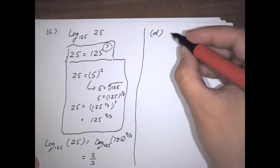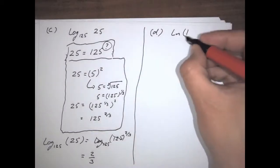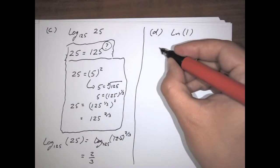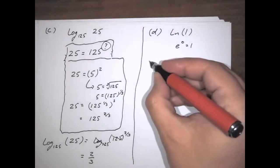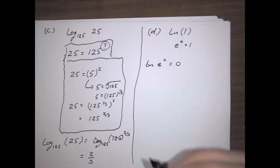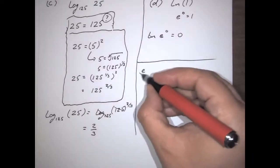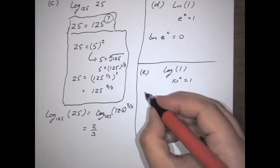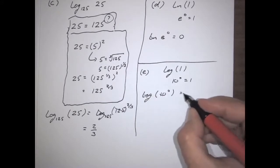Now, what if I asked something like ln of 1? Well, ln of 1 is the same as asking: e to what power makes 1? And ln of 1, like any other logarithm of 1, equals just 0. So e to the 0 equals 1, which means we're talking about ln of e to the 0, which is just 0. And for that matter, if this had been log of 1 — well, 10 to the 0 equals 1, which means we're talking about log of 10 to the 0, which cancels and just leaves 0.